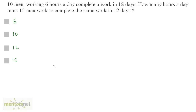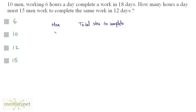10 men working 6 hours a day complete a work in 18 days. How many hours a day must 15 men work to complete the same work in 12 days? We can solve this by taking the total number of hours required to complete the work. We have 10 men who work for 6 hours a day for 18 days, so the total hours to complete is 6 hours times 18.